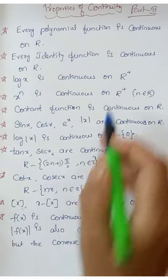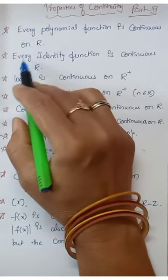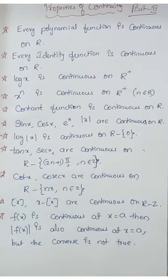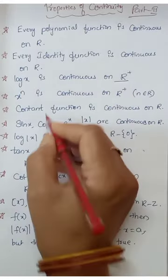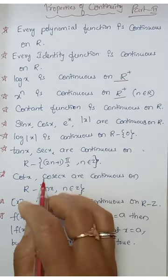Every polynomial function is continuous on R. Every identity function is continuous on R. log x is continuous on R+. x to the power a is continuous on R+ or positive.